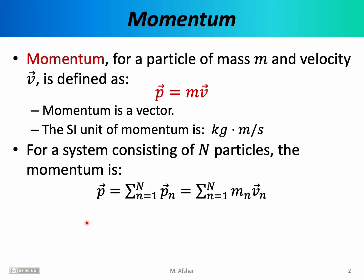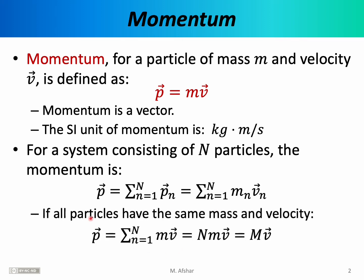In some cases, this complicated expression simplifies. In particular, if all the particles have the same mass and velocity, then all of the m sub n's will be equal to each other and all of the v sub n's will be equal to each other. For example, if you have a solid metallic cube made entirely of iron atoms, then every one of those iron atoms is going to have the same mass. And if the solid cube is simply sliding across the floor with some constant velocity, then we can say that all of those iron atoms have the same velocity vector — they're all moving in the same direction at the same rate.